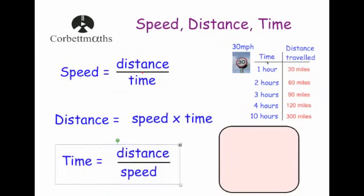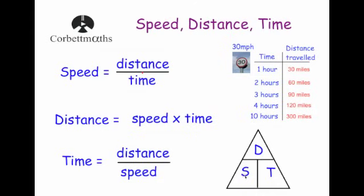If you want to find the time taken: if I travel 300 miles at 30 miles per hour, 300 ÷ 30 = 10 hours. These three formulae are very important to learn. You might also see a triangle with S, D, and T — cover up what you're looking for: cover S gives D over T; cover D gives S × T; cover T gives D over S. Alternatively, just think about what miles per hour means and work it out from there.